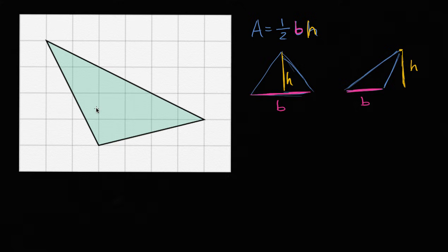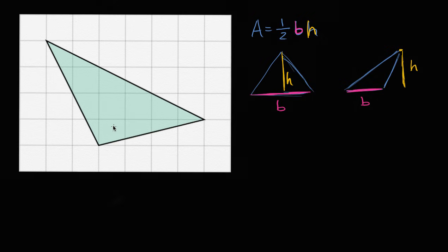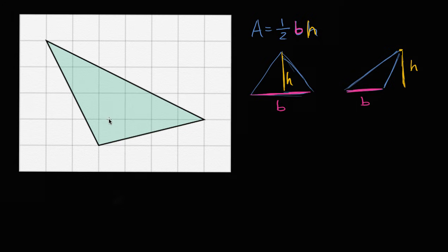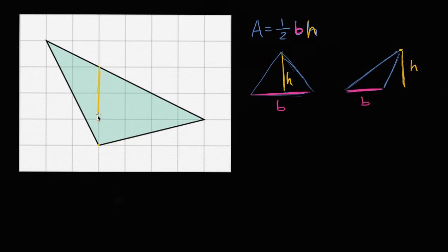So how can we apply that here? Well, this triangle is on a grid, but it's at an angle, so it's hard to pick out the base and the height for the triangle as a whole. What we could do — and there are several ways to approach this — is break this triangle up into two or more triangles where we can figure out the base and height for each. I'm picking these two points because it breaks it up into two triangles where I can figure out the base and the height.